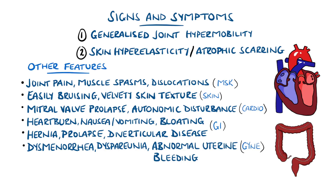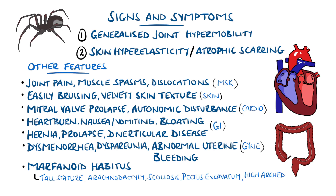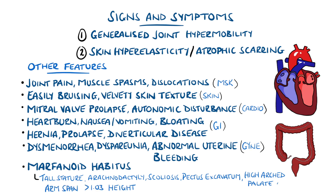A collection of physical characteristics known as the marfanoid habitus may be present, but it is typically incomplete. These include tall stature, arachnodactyly — meaning spider fingers, reflecting long slender fingers and toes — scoliosis, pectus excavatum, a high-arched palate, and an arm span greater than 1.03 times the height.